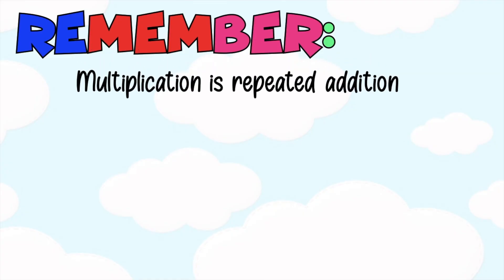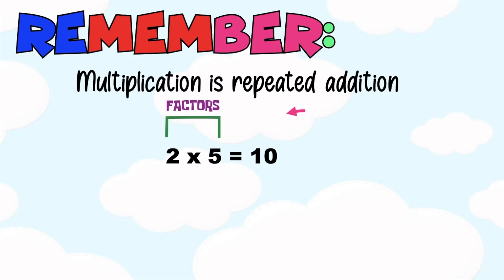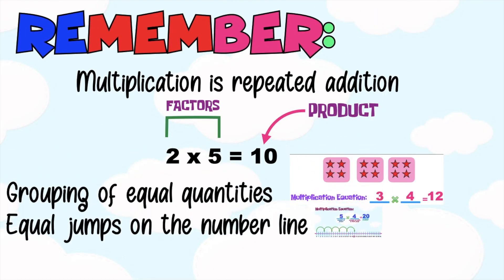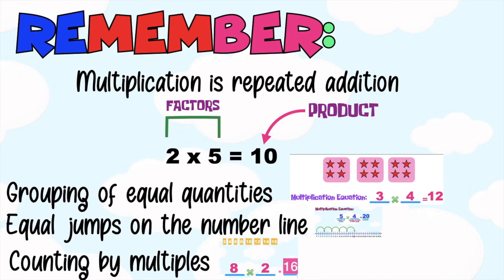Always remember, children, multiplication is repeated addition. Two times five is equal to ten, wherein two and five are what you call the factors, and ten is what you call the product. We have three ways to find the product: grouping of equal quantities, equal jumps on the number line, and lastly, counting by multiples.